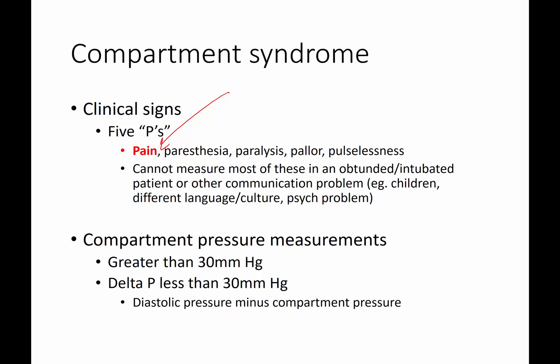In the lower extremity, you can start with foot drop — the anterior compartment typically goes first. Then pallor, meaning discoloration, and pulselessness. You really don't want things to get to this stage because at that point you potentially face limb loss. You want to catch things at the pain stage, where pain is getting out of proportion to the degree of injury.